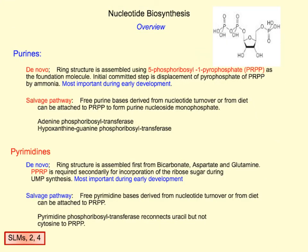There are two pathways to produce nucleotides: the de novo pathway, which means making it from scratch, and the salvage pathway. Purines and pyrimidines both have different mechanisms for de novo and salvage pathways. The de novo pathway requires a lot of energy, so as adults we primarily use the salvage pathway. But in development, the de novo pathway is primary because you have to form new nucleotides — you don't just have a store of them waiting to be salvaged. So de novo is primary in development, and the salvage pathway is primary in adults.